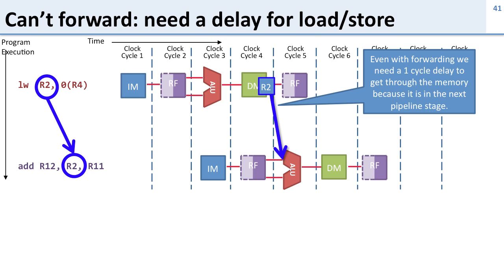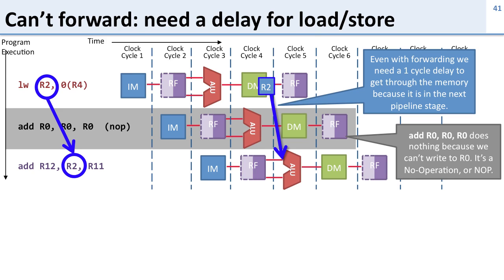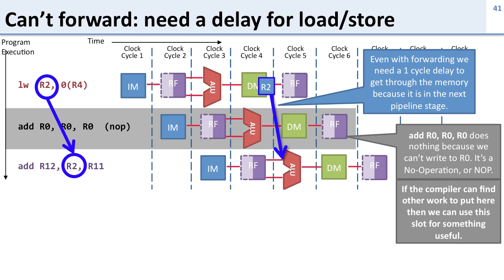Even with forwarding, we still need that one cycle delay because R2 is only ready after memory has been accessed. This means we need a no-op instruction in between while we wait — for example, add R0, R0, which adds zero to zero and does nothing useful. However, if the compiler or the programmer can find useful work to put there, we don't have to waste that cycle. Any instruction that doesn't depend on the load word could be placed there to take advantage of the delay.